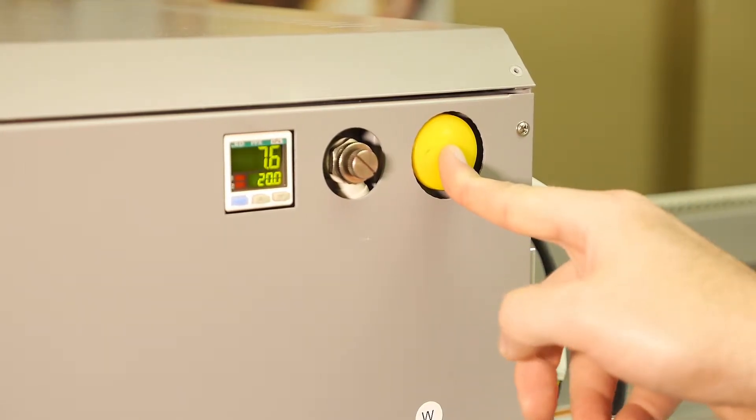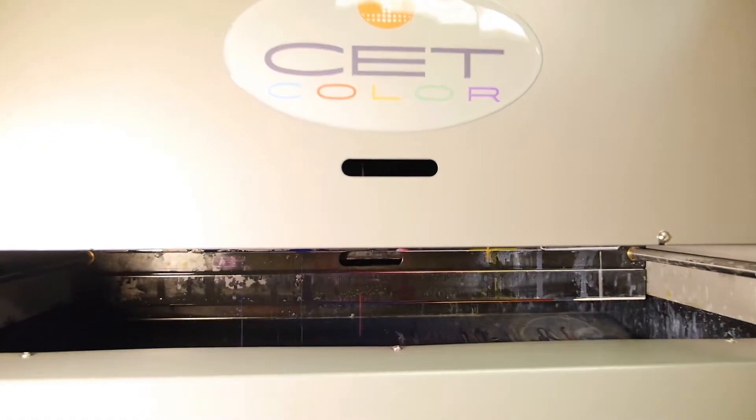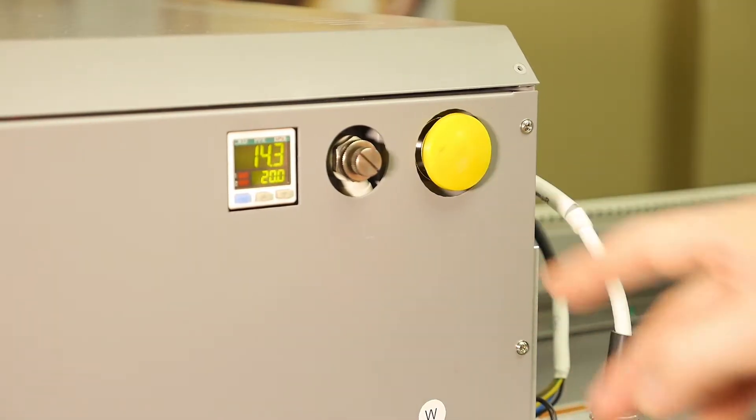Press and hold the yellow ink prime button until the negative pressure reaches positive 16, then release the button.